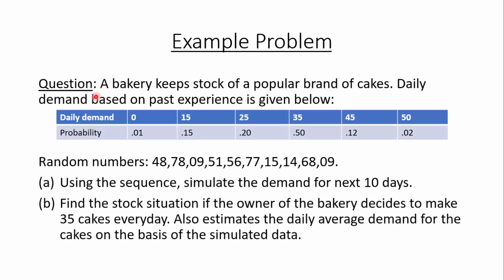Our problem states that a bakery keeps stock of a popular brand of cakes. Daily demand based on past experience is given: 0, 15, 25, 35, 45, and 50, with corresponding probabilities 0.01, 0.15, 0.20, 0.50, 0.12, and 0.02. Random numbers are given in the problem. The first task is to simulate the demand for the next 10 days using the given sequence of random numbers.